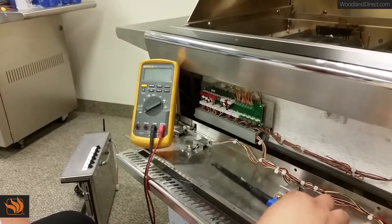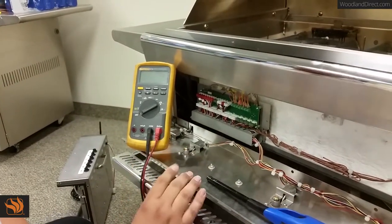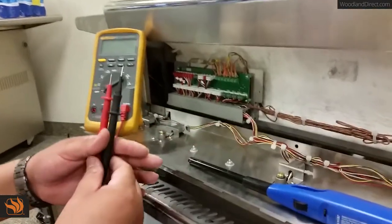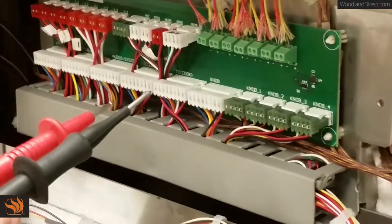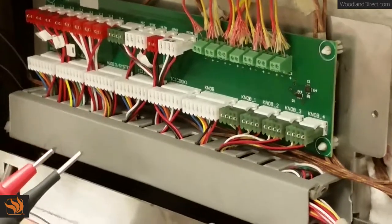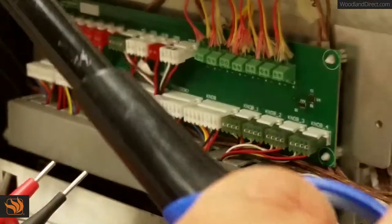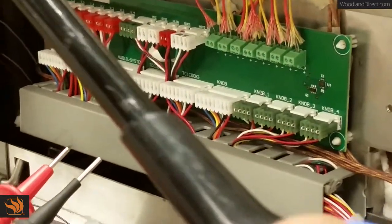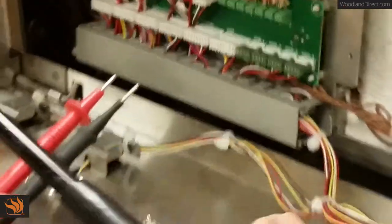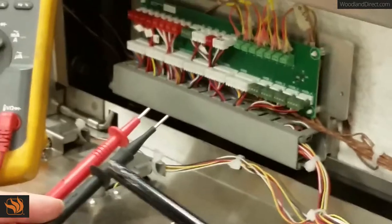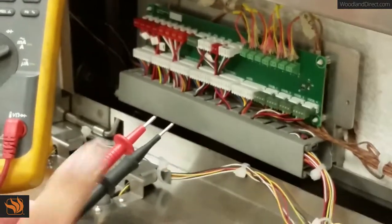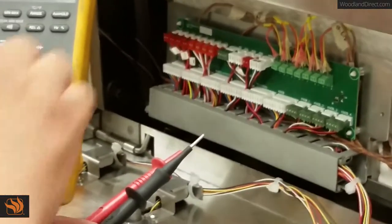In this case we have just a little butane lighter. What you want to do is use the probes on the multimeter according to the polarity and fire up the source of heat and apply the heat to the individual TC to make sure that it's functioning. You will see a climb in temperature if the TC is working properly. So I'll show you how to do this one here.